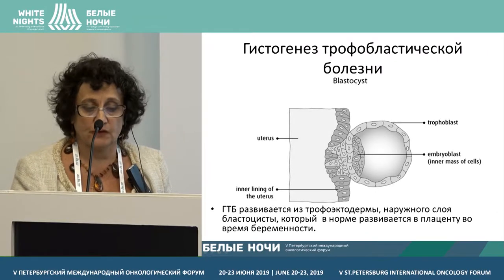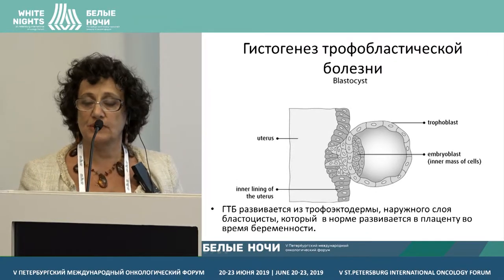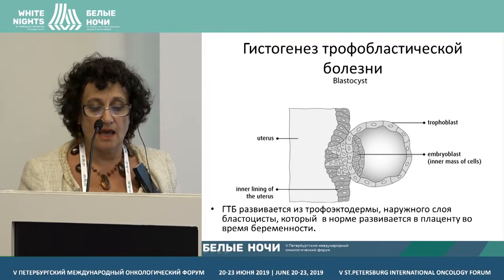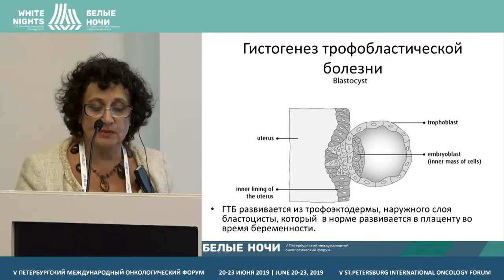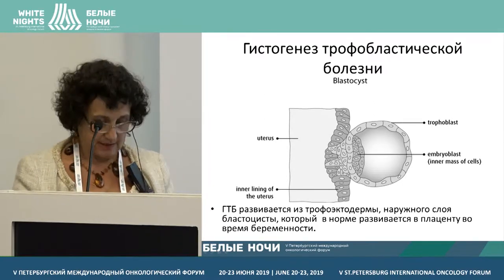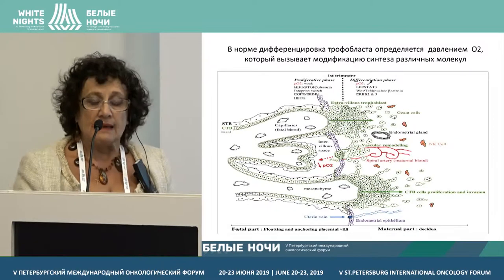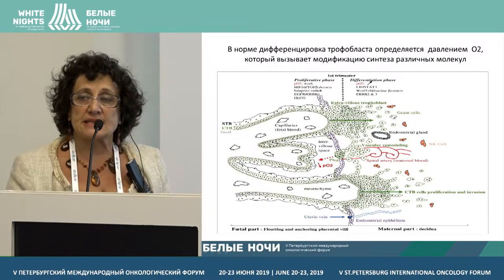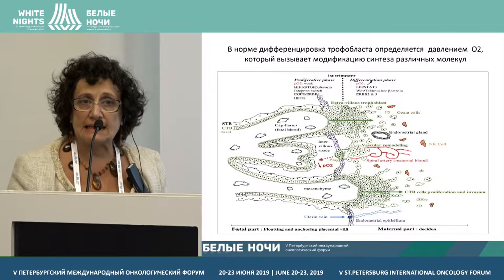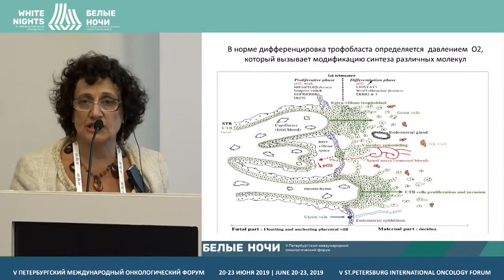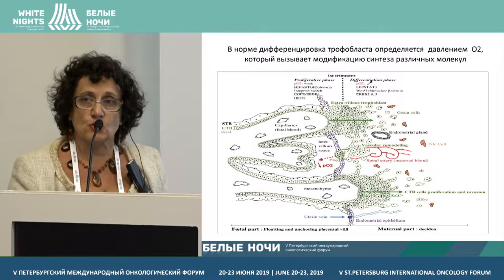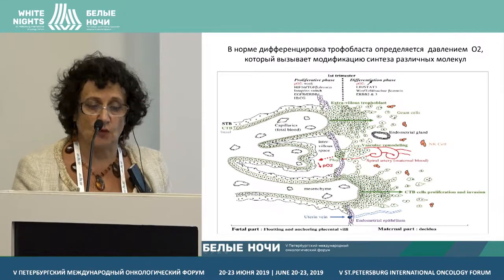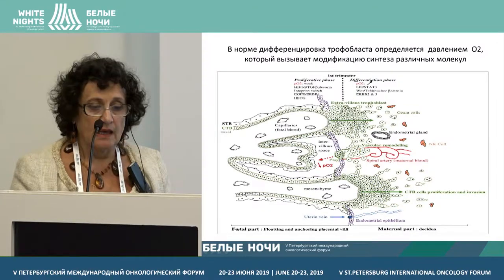Trophoblastic disease develops in the trophoectoderm of the superficial layer of the blastocyst, which in the norm would develop into the placenta during pregnancy. In the process of tissue differentiation, which depends very frequently on hypoxia and oxygen pressure, differentiation is impaired.